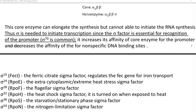The sigma factor is involved in the recognition of the promoter. A common sigma factor is sigma 70, which plays a major role in E. coli cells as a promoter-binding sigma factor. It increases the affinity of the core enzyme to bind to the promoter and decreases the affinity for non-specific DNA binding sites.